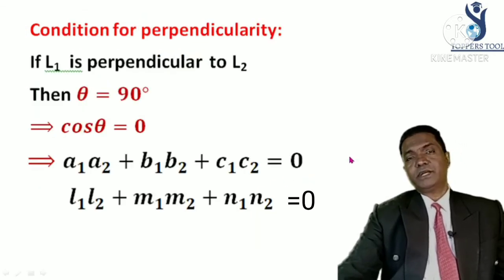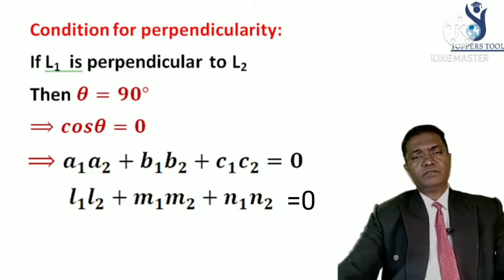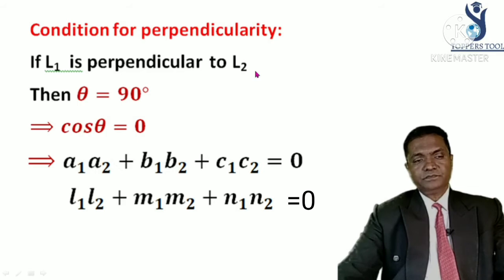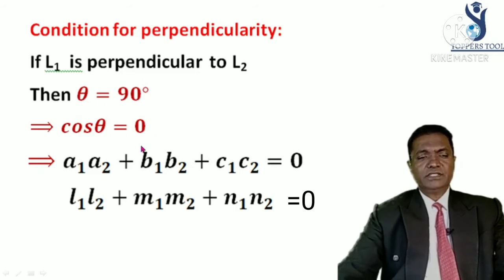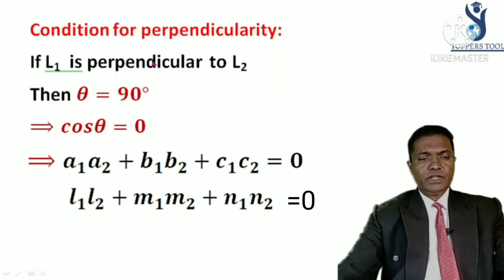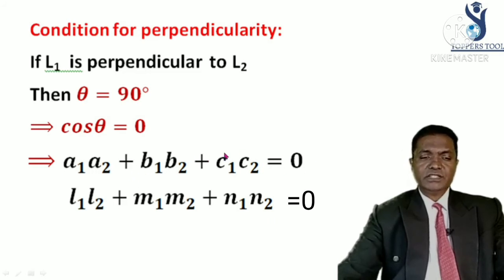Now we have the condition of perpendicularity. If two lines L1 and L2 are perpendicular, the angle between them is 90°, and cos 90° = 0. Substituting into the formula, cos θ = 0 gives A1A2 + B1B2 + C1C2 = 0. This is the condition for perpendicularity: whenever two lines are perpendicular, the sum of the products of their direction ratios equals zero.